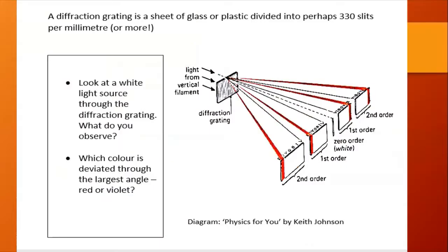A typical transmission diffraction grating used in your lab may have 300 or so slits per millimeter. Of course we can't see individual slits, but when we look at a white light source, perhaps a ray box bulb, through the diffraction grating we see a bright white central image with spectra arranged symmetrically either side. We see the first order, second order spectra and so on, but there are limits to the number of spectra we can see as we'll investigate in a moment.